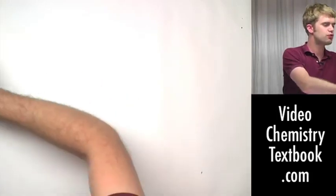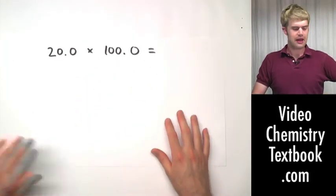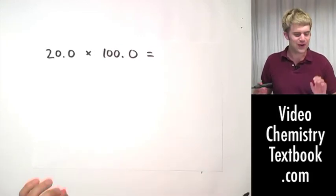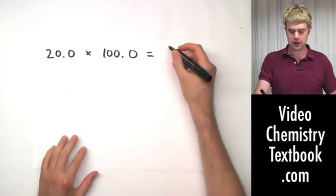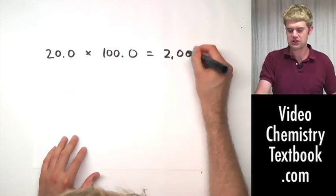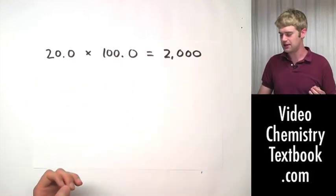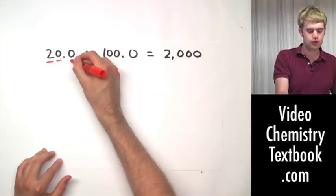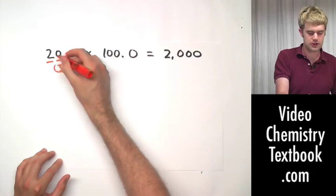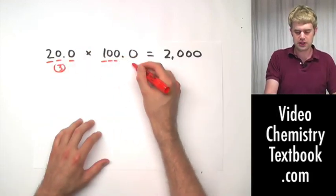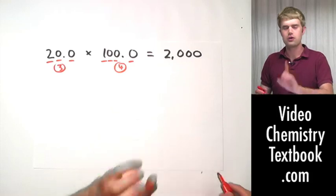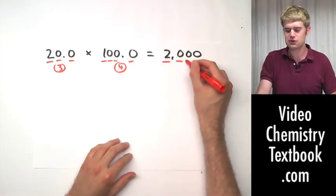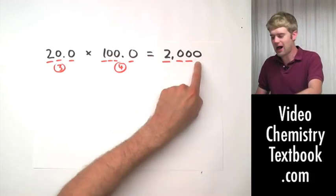Now this gets increasingly useful as we start looking at problems like this — this is harder than it seems. I do this multiplication and the answer I get is 2,000. Let's look at how many significant figures it should have. There are three significant figures here because of the right-hand zeros and decimal place, and four significant figures here. So I want three significant figures in my final answer. I'm going to keep the two and I'm going to keep these two zeros, but not this zero.